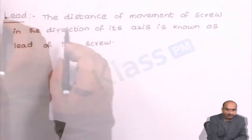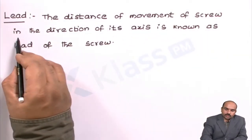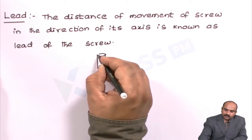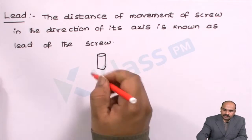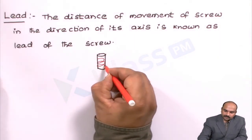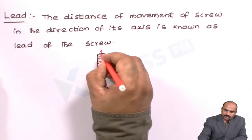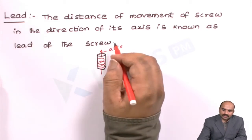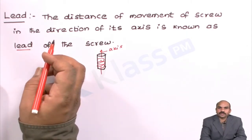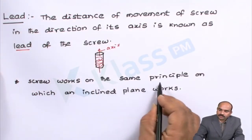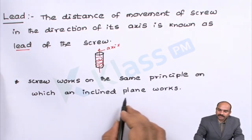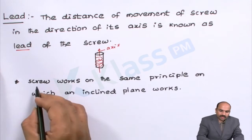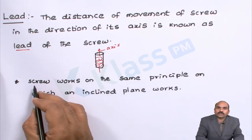Now let us define the lead of the screw. It is the distance of movement of the screw in the direction of the axis of the screw. Along its axis, whatever distance the screw moves, that distance is called the lead of the screw. The screw works on the same principle on which an inclined plane is working — the working principle of the inclined plane and the working principle of the screw are the same.